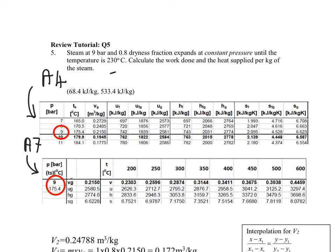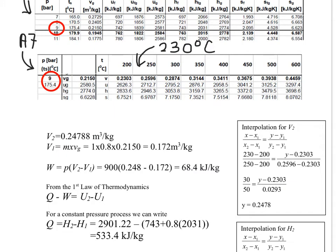Now the data in our steam tables consists of 200, 250. So our data which is in between here, 230, is missing. So what we have to do is to interpolate. So let's get started.